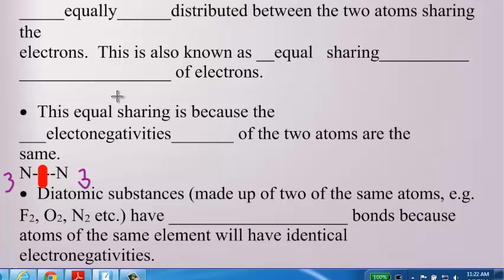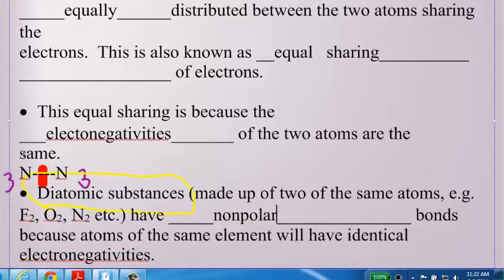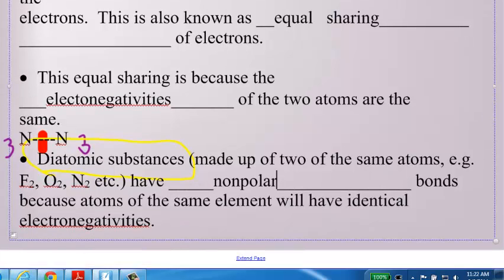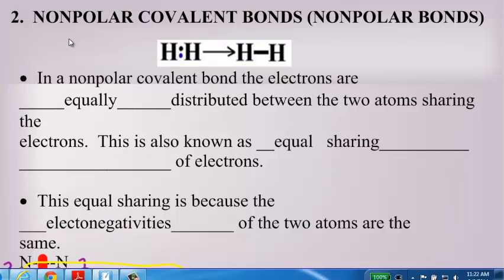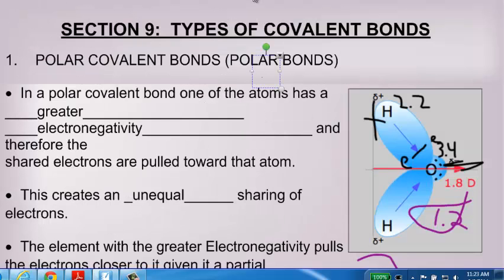The easiest way to recognize a non-polar covalent bond is to look for a diatomic. All of your diatomics, your obsessed Cleveland Browns fans have no intelligence. All of your diatomics will have non-polar covalent bonds. Because you're bonded to yourself. You'll have identical electronegativities. So in short, the non-polar covalent bond is two of the same non-metals. And a polar covalent bond, if we could just go back to that one real quick, that the polar covalent bond is two different non-metals.